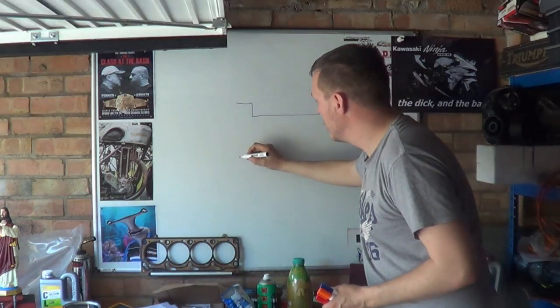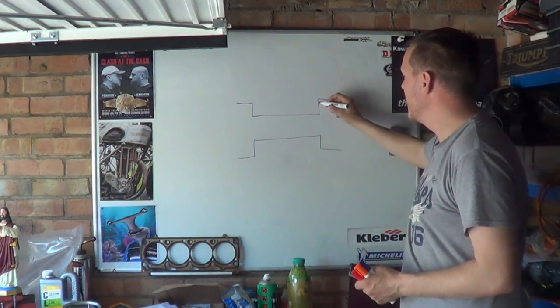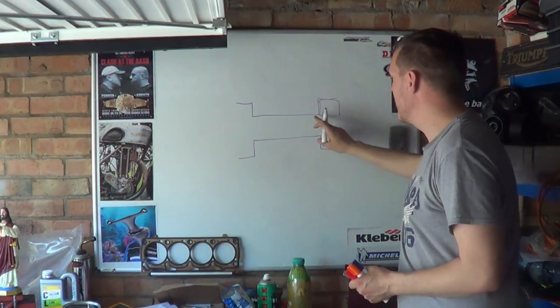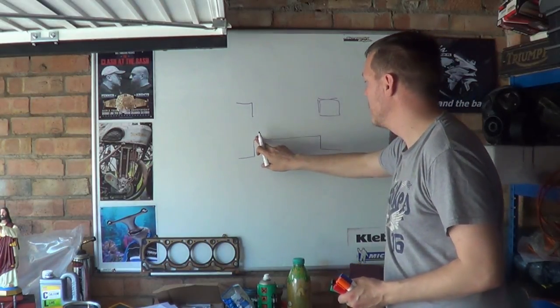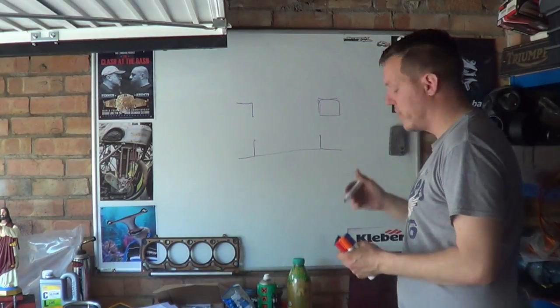Like so, up up up up like this. And in here you have a wheel bearing. Actually this is all wrong. So you have a wheel, no.